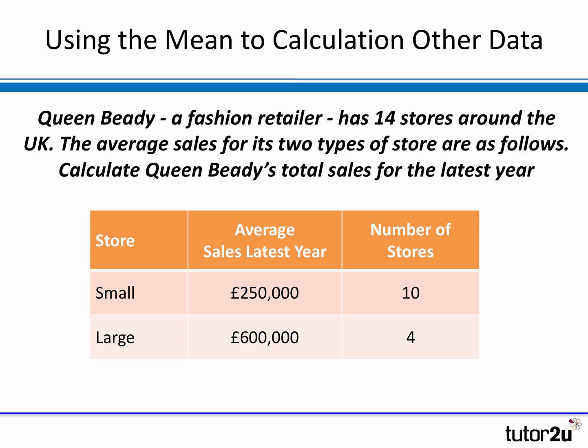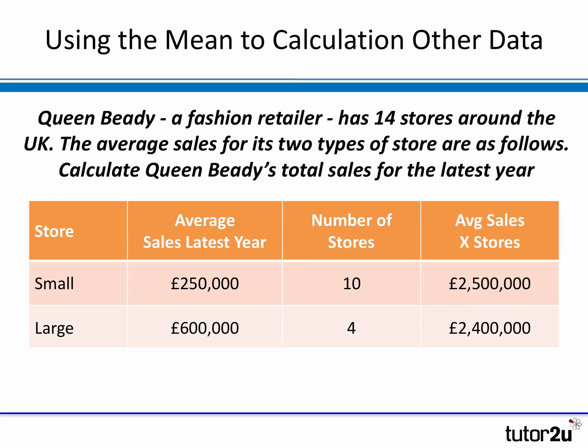We've got a fashion retailer here called Queen Beady. The fashion retailer has 14 stores around the UK, and its stores are divided into two types: small and large. It's got 10 small stores, which in the latest year achieved an average sales per store of £250,000. And it's got four large stores, which achieved average sales in the latest year of £600,000. The question is: can you calculate Queen Beady's total sales for the latest year? We can use the average data — the average for each of the 10 small stores and the four large stores — to work out the total by multiplying the average by the number of stores.